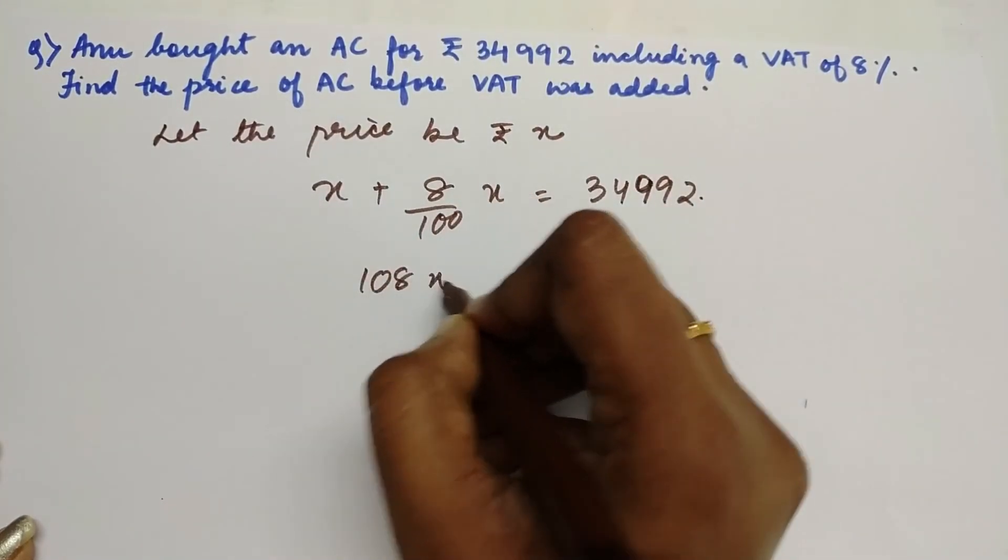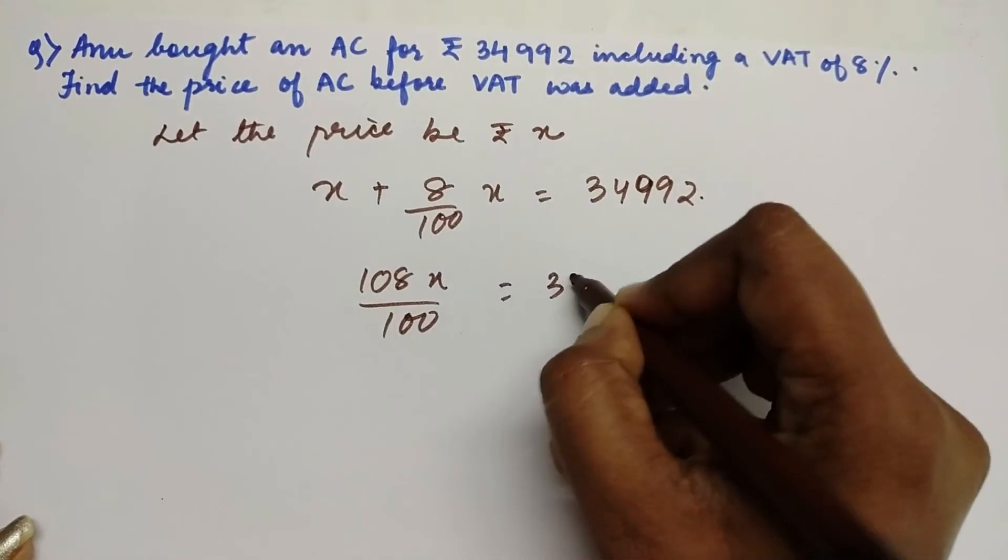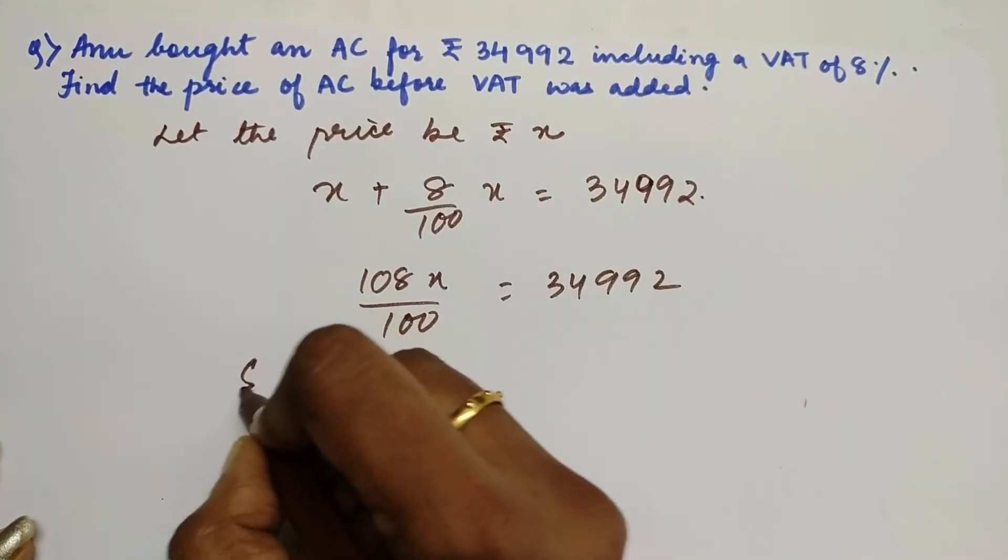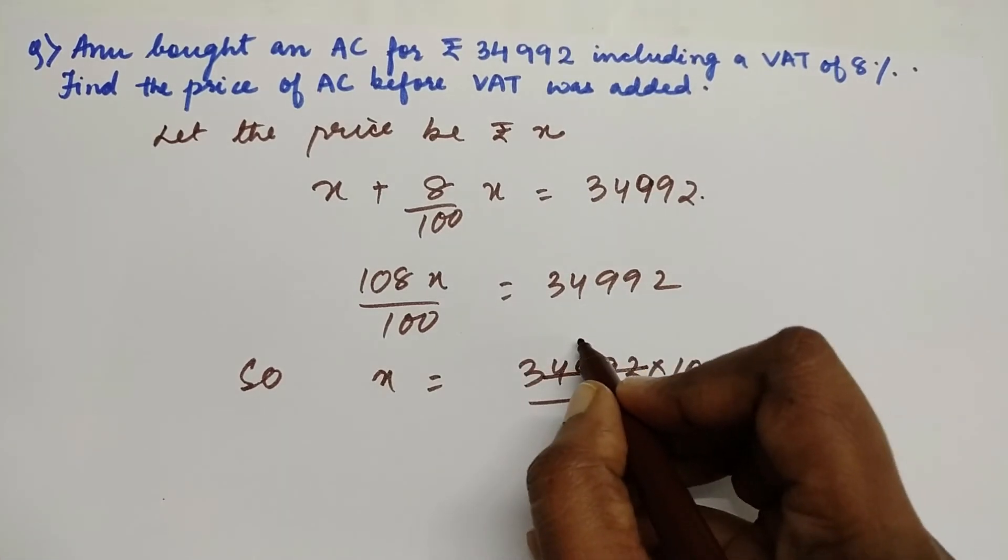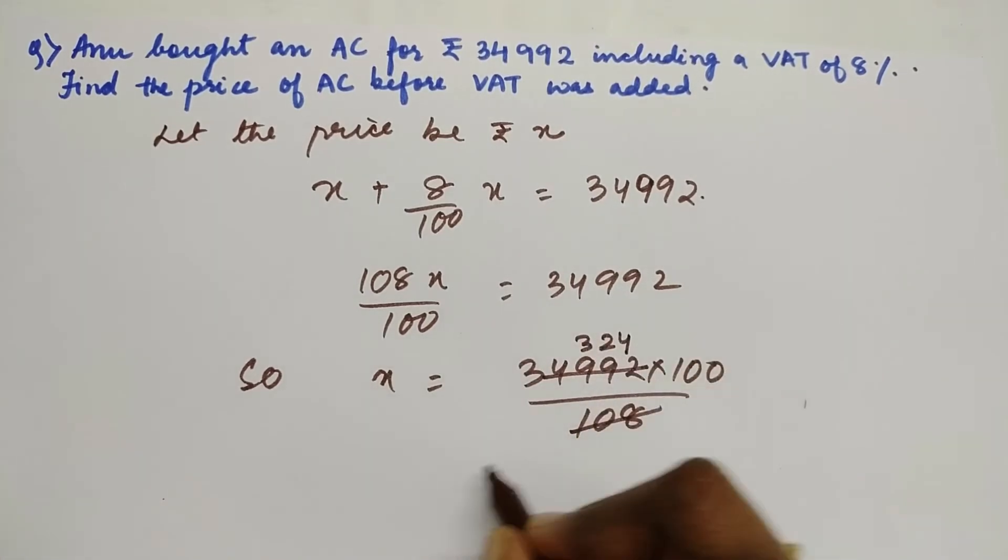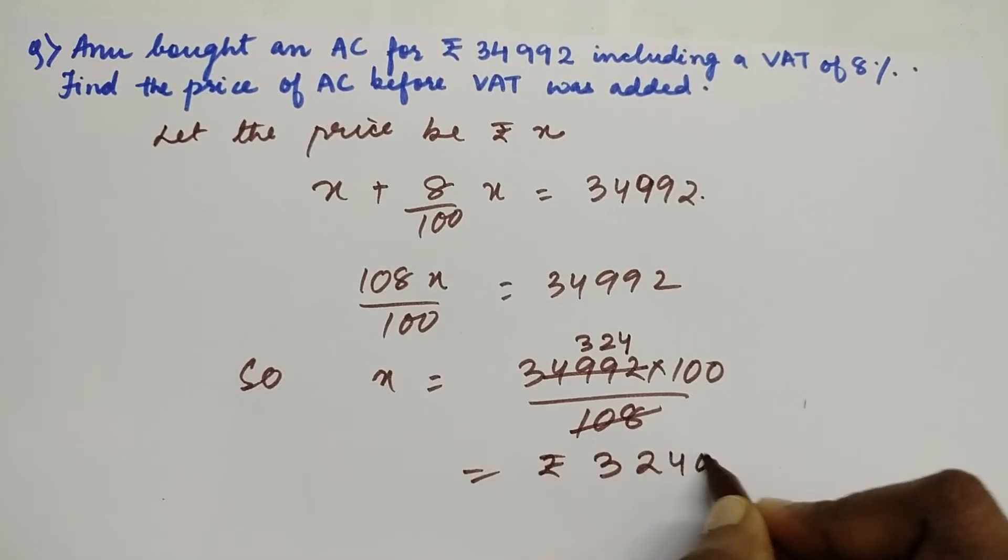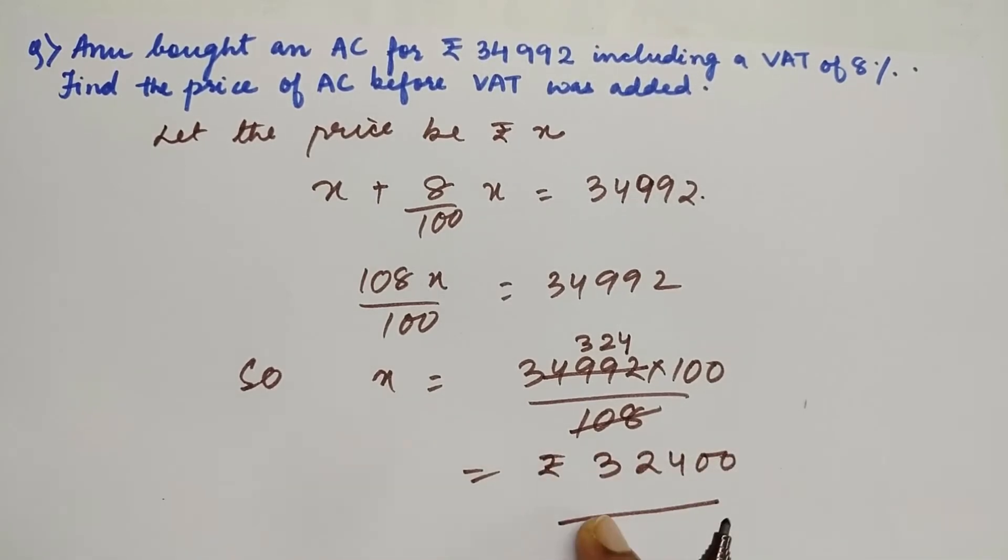Here we will simply be calculating the value of X. So if we calculate this, this is going to be ₹32,400. So the price before addition of the sales tax is ₹32,400.